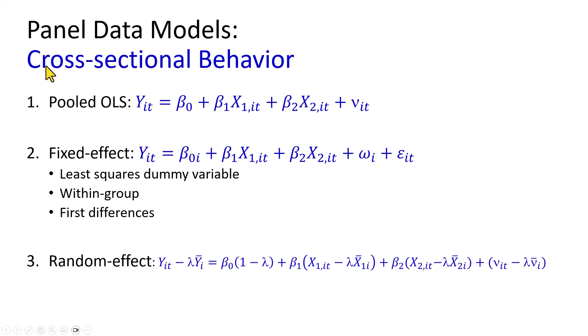On the other hand, if you wish to examine the cross-sectional behavior of the series, then perhaps we could run a pooled OLS, but this assumes that there is no unobserved group-specific effects, aka heterogeneity. Otherwise, we would have to run either fixed effects or random effects.